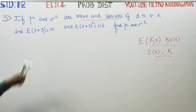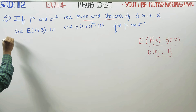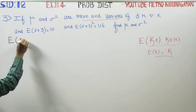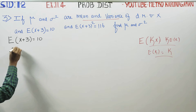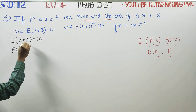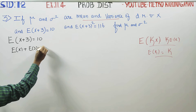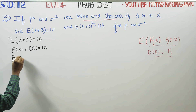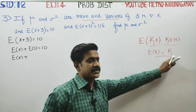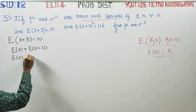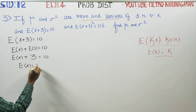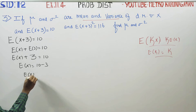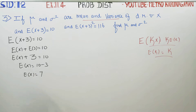From the first clue, expectation of (X + 3) is equal to 10. Since 3 is a constant, this becomes expectation of X plus 3 equals 10. Therefore, expectation of X is equal to 10 minus 3, which gives us E(X) = 7. This is our first result.